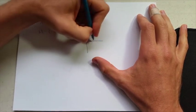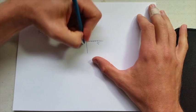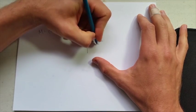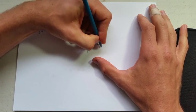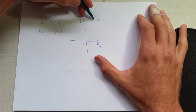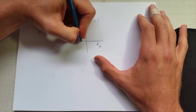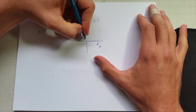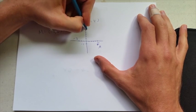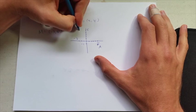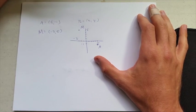So A is (5, -1)—5 to the right, down 1. So that point is A. I don't know B, so I can't graph it, but M is (-3, 5). So there's M, A, there's the midpoint.